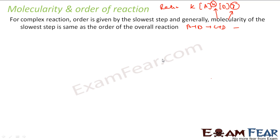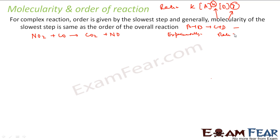Let's take one example: NO2 + CO → CO2 + NO. Experimentally it has been seen that the rate = k[NO2]^2 — a second order equation. Now let's try to find this equation using the concept of molecularity.